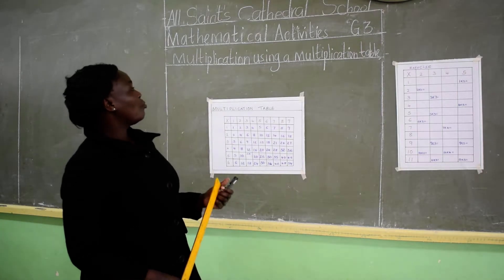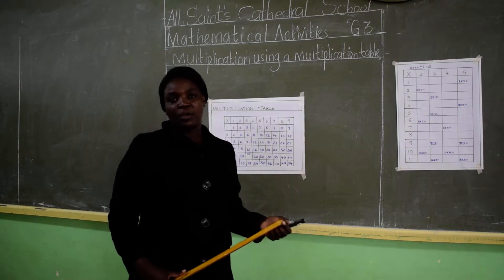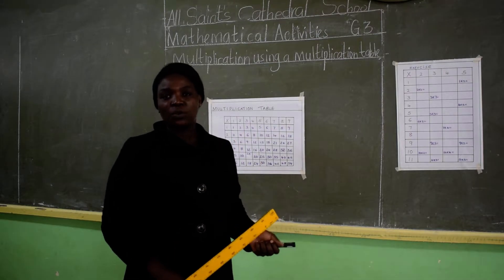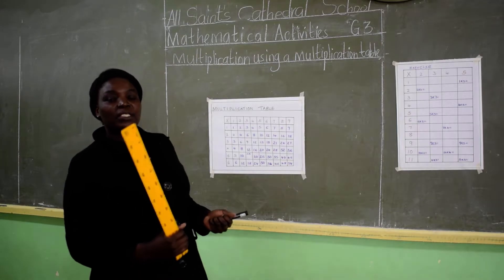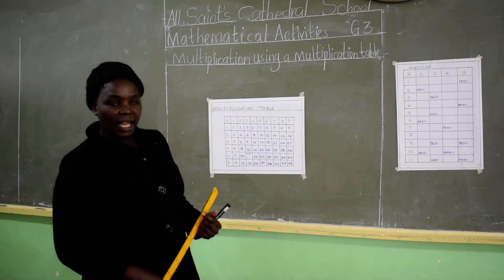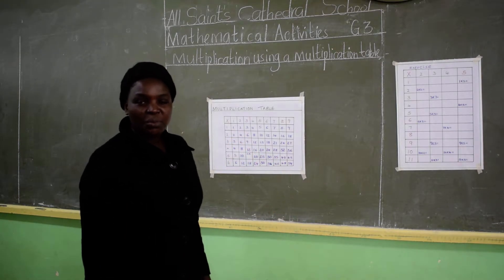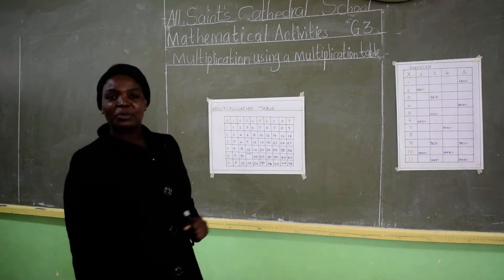We are going to do multiplication using multiplication table. In the previous lessons we started with multiplying using groups or by grouping. Then the second one was multiplication using a number line. But today we have advanced because now we know how to multiply when we are grouping. We can also use a number line. Why not try the multiplication table?